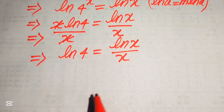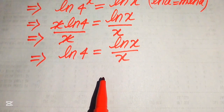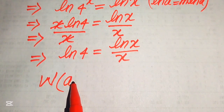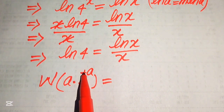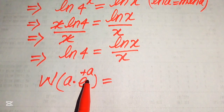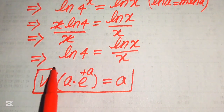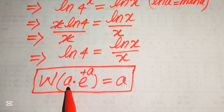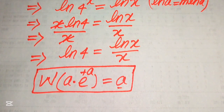Further, we solve this with the help of the Lambert W function. We state the Lambert W function as: W of a times e to the power of a equals a. So if we have an exponential function whose exponent is multiplied by the same term, applying the Lambert W function returns that term a directly.